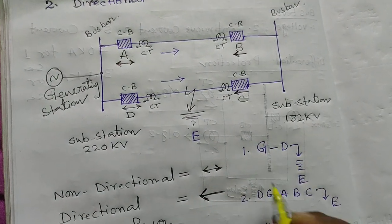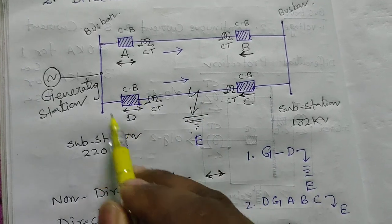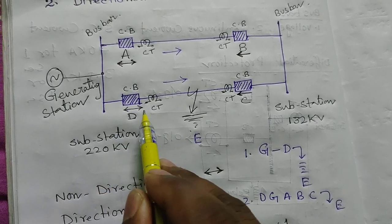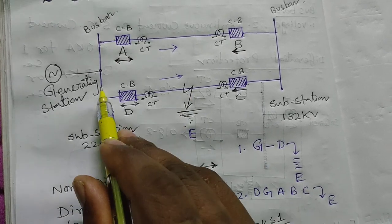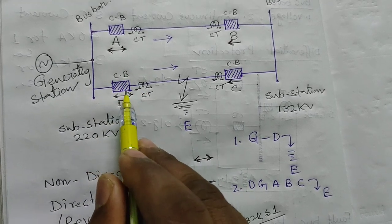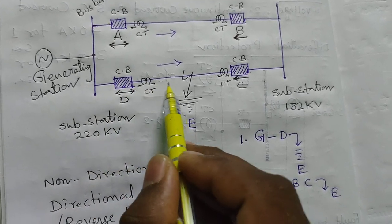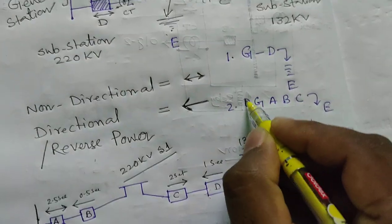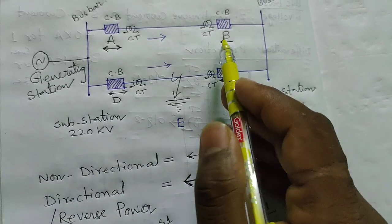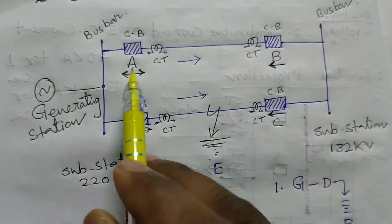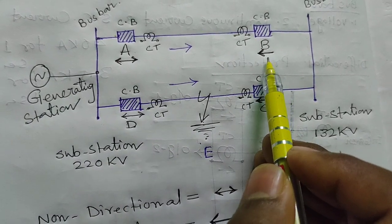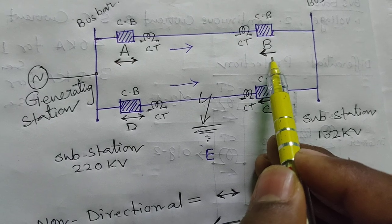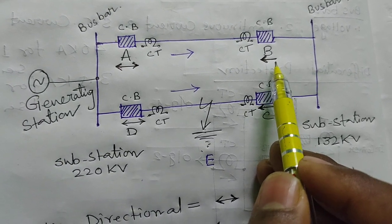We are using a non-directional relay here at the generating station end, so this breaker will trip in both directions. At the 132KV substation end, a directional relay symbol is used — you should remember that this symbol provides reverse power flow protection. If the power flows in the direction matching the relay symbol, the relay will trip. If the power does not flow as per the symbol direction, the breaker will not trip.